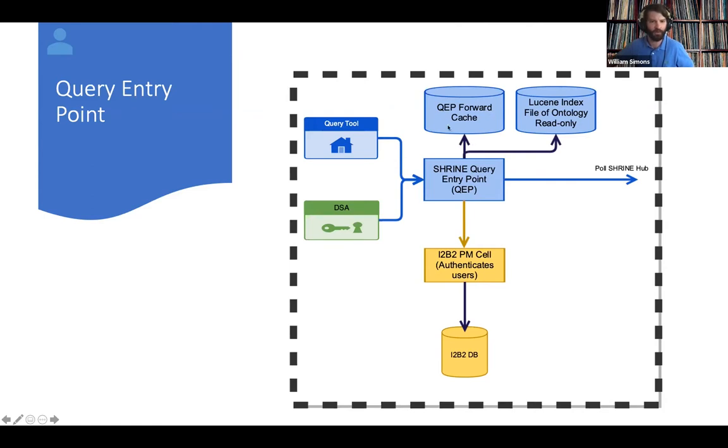We store all of our results from the network in what we call the forward cache here. It's a database of all of the query definitions that users have defined, the results that we've gotten back for those queries, and the status of the result as well, whether it's an error or incomplete. Sometimes results can be held up at sites, either because they have lots of data and they've queued the queries, or perhaps the site adapter is not online at the moment and will pick up its query execution at a later time.